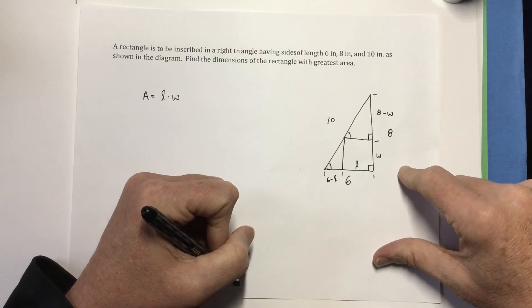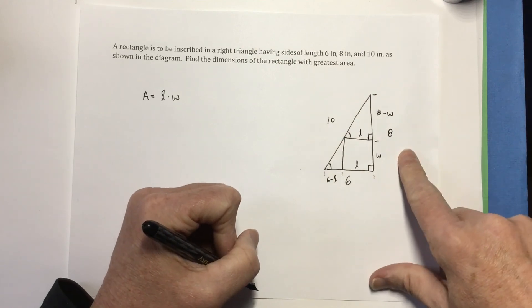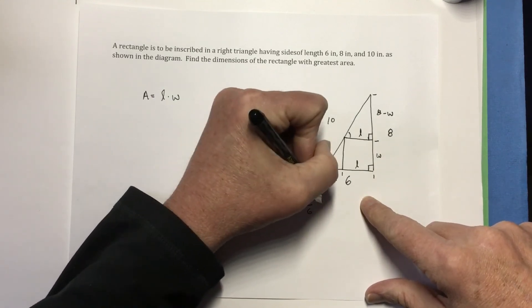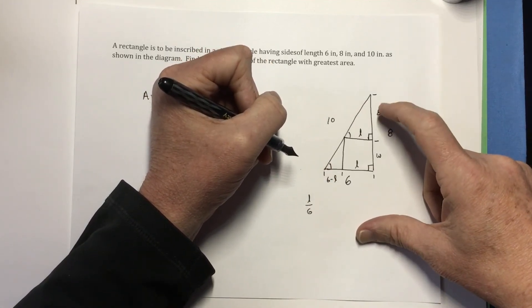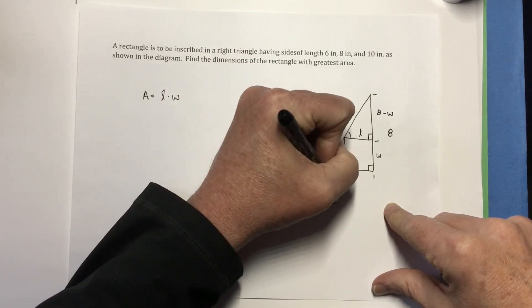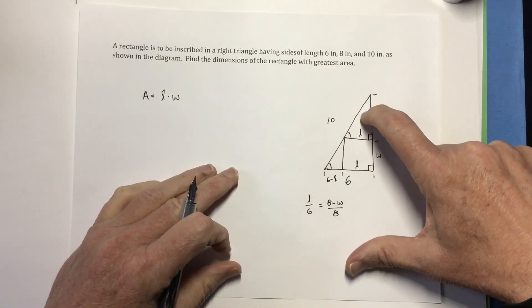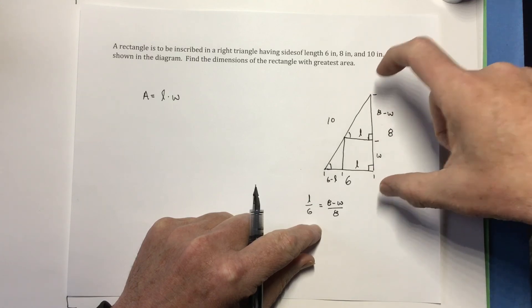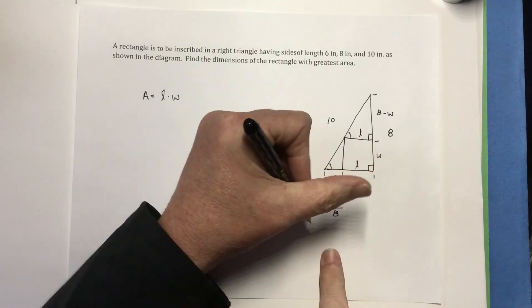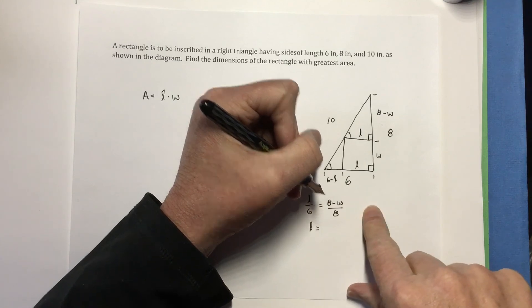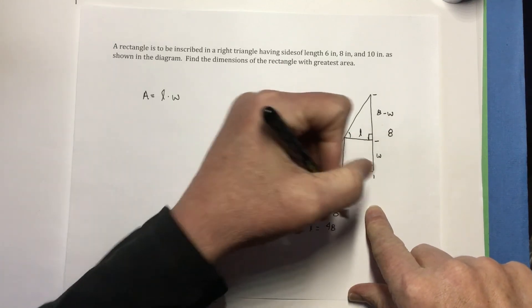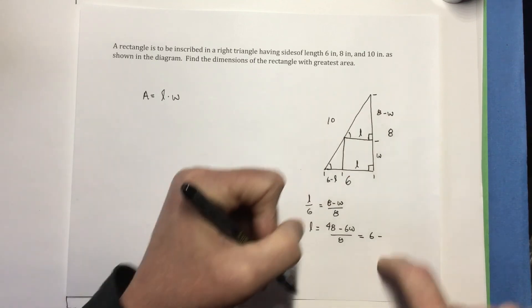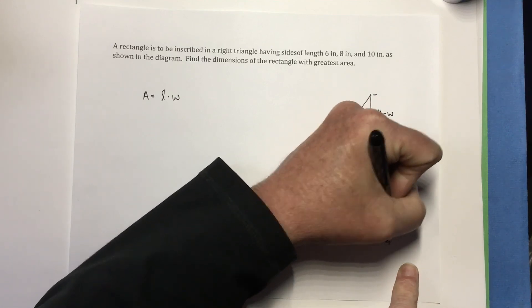So what do I know? I know I'm going to label this L. I know that that L is to 6 as 8 minus W is to 8. In other words, this short side of this triangle is to the short side of the large triangle as the other leg of this triangle is to that leg of the large triangle. So I'm going to multiply by 6. So I now have L equals 6 times that, which is going to be 48 minus 6W over 8, which will be 6 minus 3 fourths W.